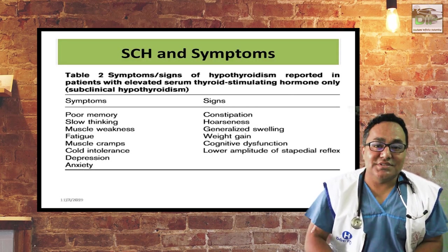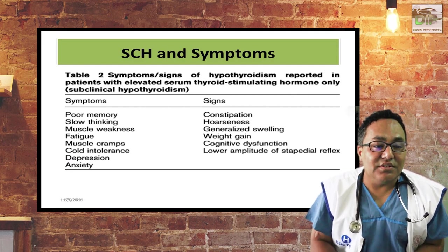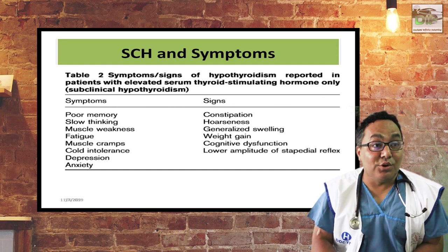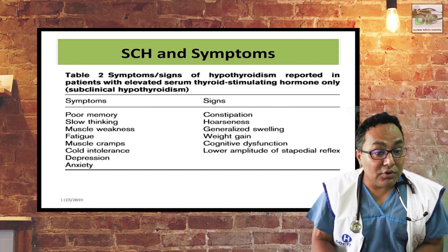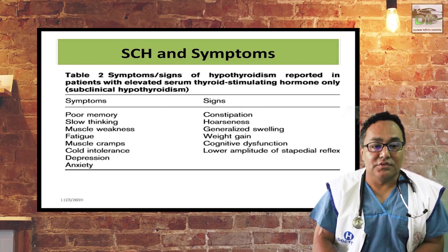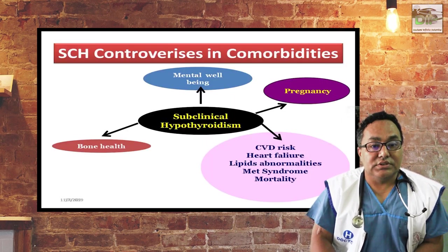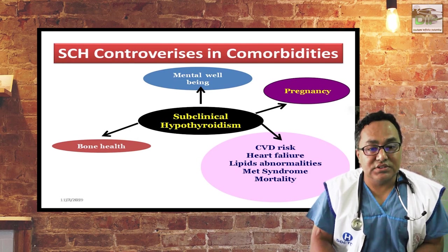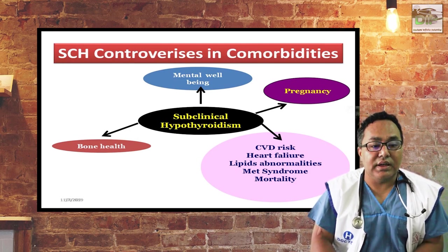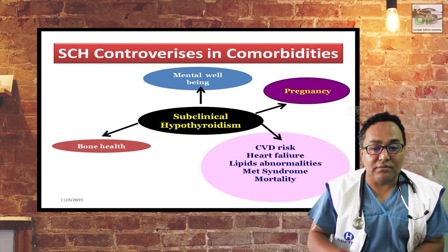Regarding controversy in subclinical hypothyroidism and symptoms, they can present with minimal symptoms — not the classical symptoms of hypothyroidism like cold intolerance or constipation. They can present with poor memory, slow thinking, fatigue, muscle weakness, or muscle cramps. Other important controversy issues include bone health, mental well-being, pregnancy, cardiovascular risk, heart failure, metabolic syndrome, and mortality.